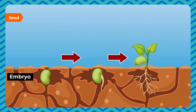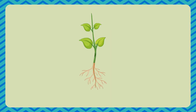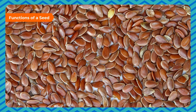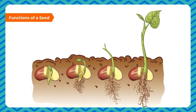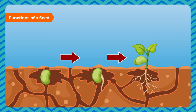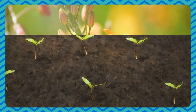A seed is a fertilized ovule. It carries a baby plant called the embryo. The seed contains a fleshy structure called the seed leaf or cotyledon, which stores food for the growing embryo. Some seeds have one cotyledon while others have two. The embryo has two parts: the radicle, which gives rise to the root system, and the plumule, which gives rise to the shoot system of the young plant. The most important function of a seed is to give rise to a new plant. It also protects and nourishes the embryo, and seeds are often used as food.